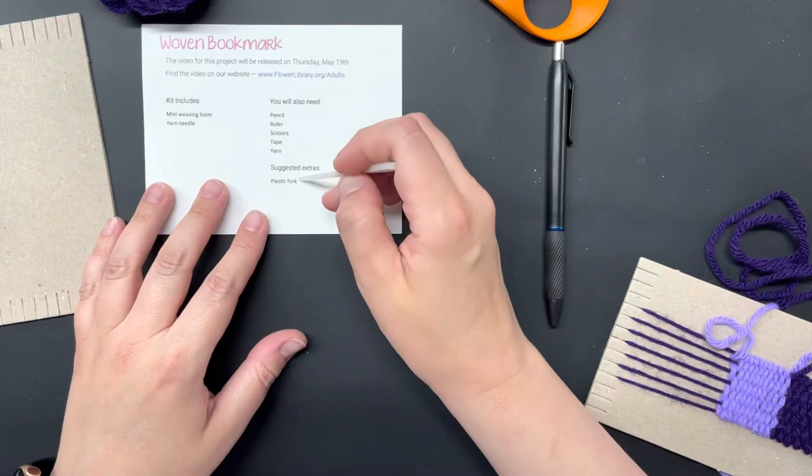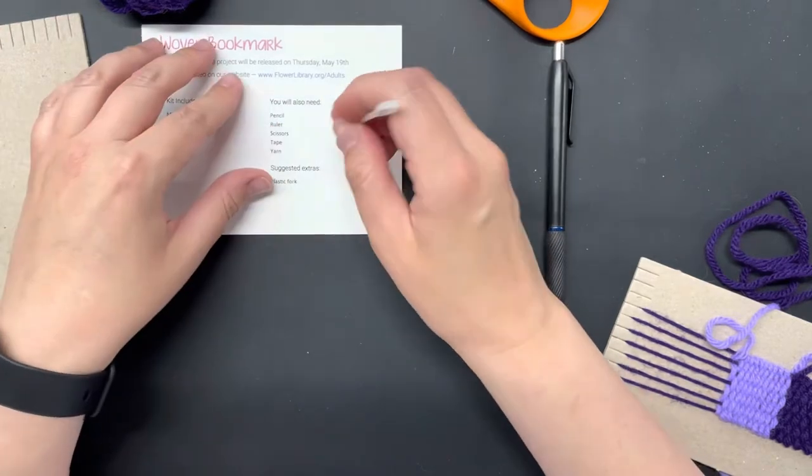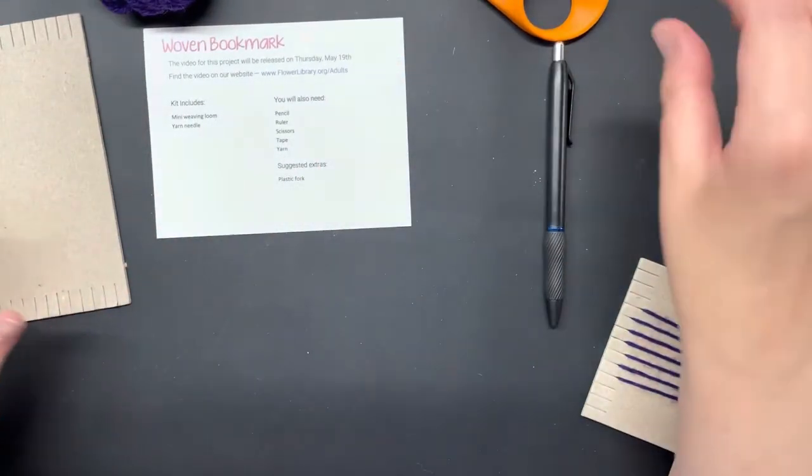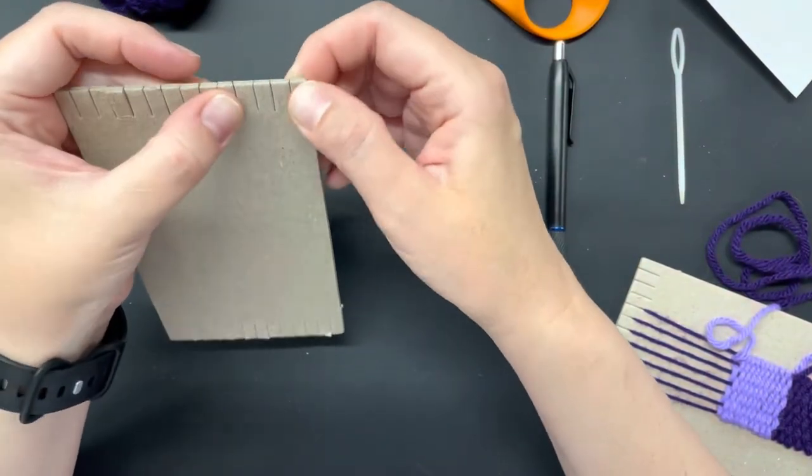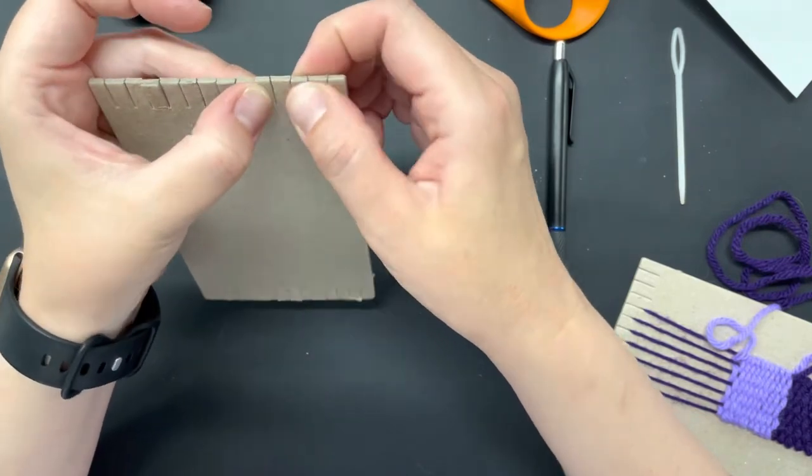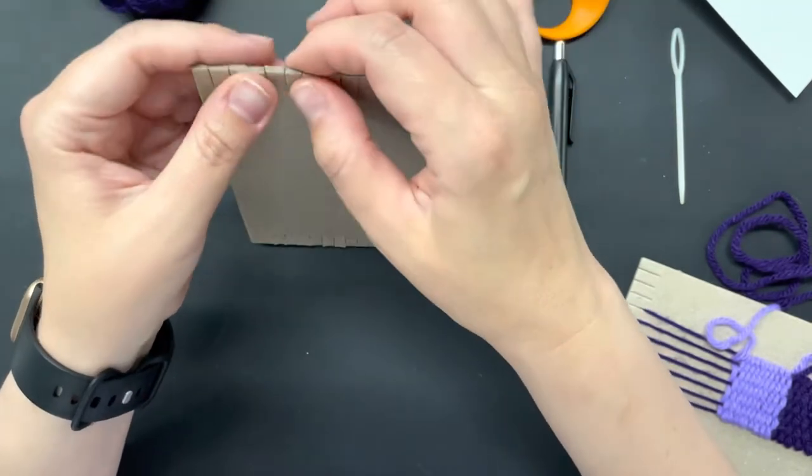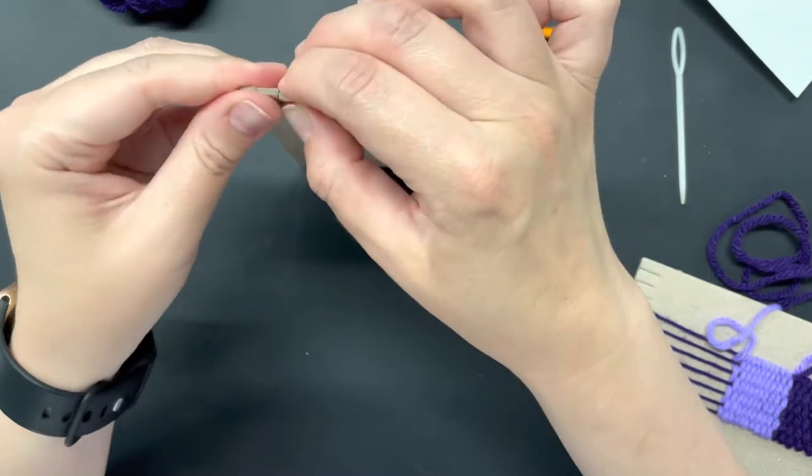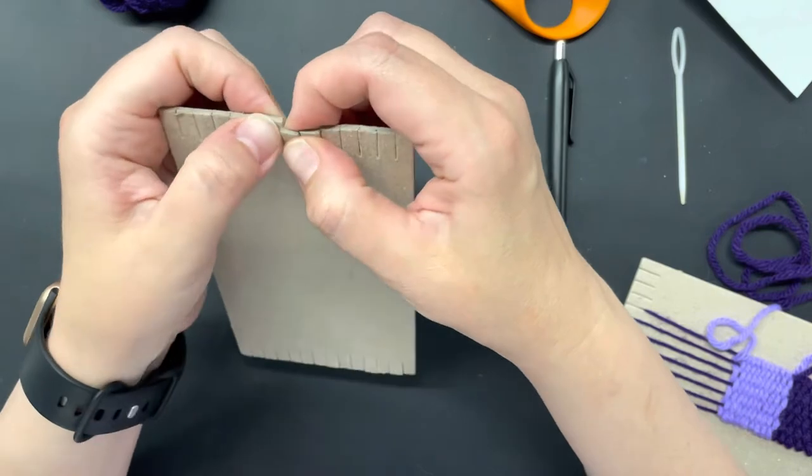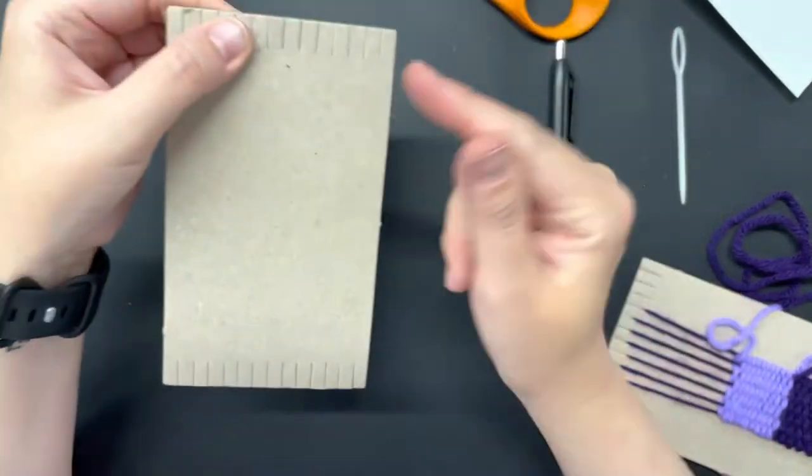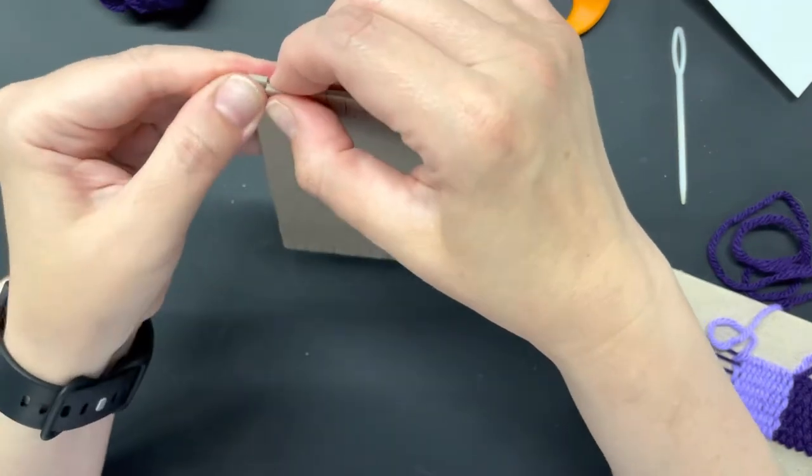Another suggested extra would be a plastic fork, but I also found that your plastic knitting needle will work fine for that step as well. So this is reusable, and you're going to find that sometimes you have to just use your fingers and shimmy the little cardboard teeth at the top in order to be able to thread your yarn through.